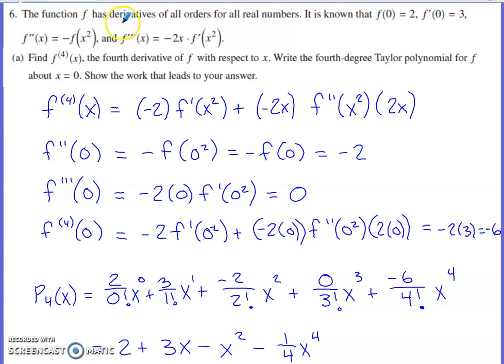We are told that function f has derivatives of all orders for all real numbers. It is known that f(0) = 2, f'(0) = 3. They tell us what f''(x) is equal to, and they also tell us what the third derivative f'''(x) is equal to.